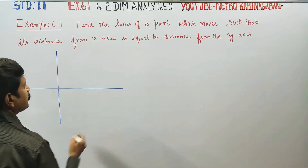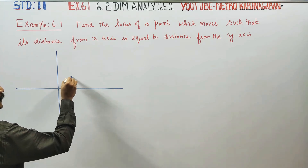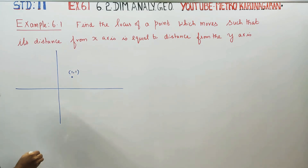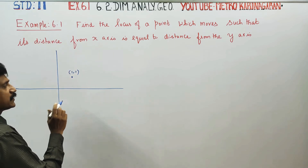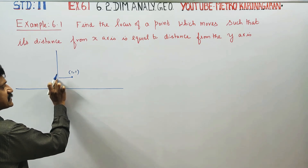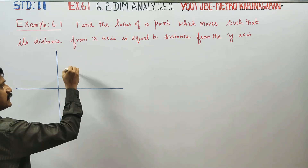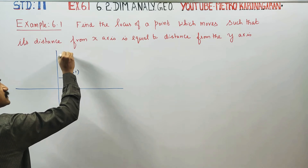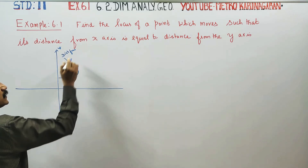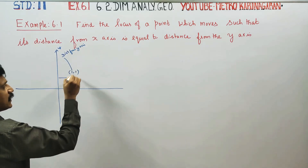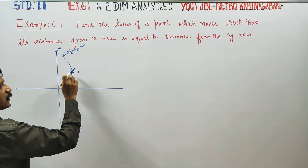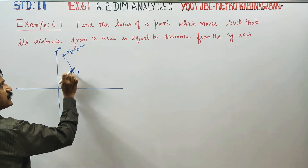If you want to see the x-axis and y-axis, consider the point (1,1). It is 1,1. The distance from y-axis — if you take the point (1,1) — is drawn parallel to the x-axis. That distance from y-axis is the x-coordinate.